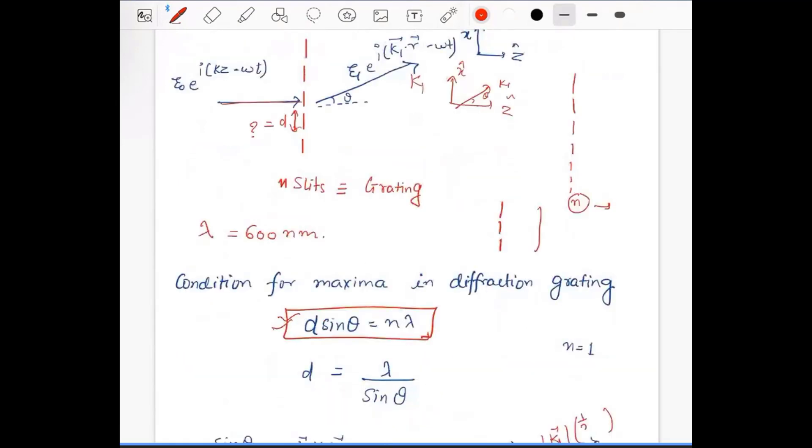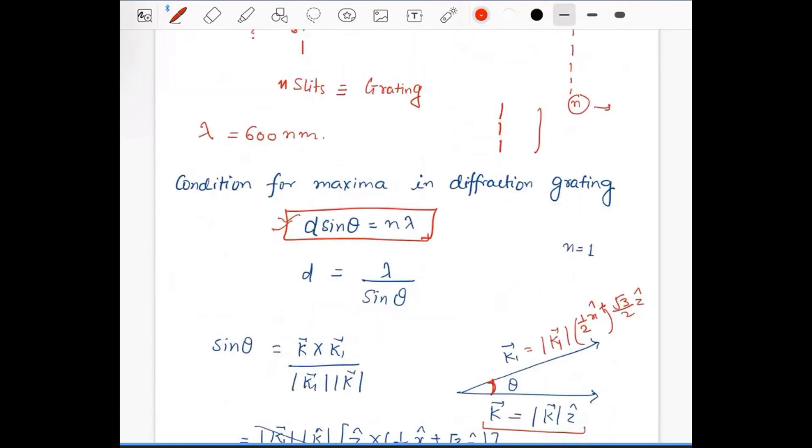One-half x̂ plus square root of three over two ẑ. So you have to know what is the angle theta. This is the condition for diffraction grating and we have to calculate d.